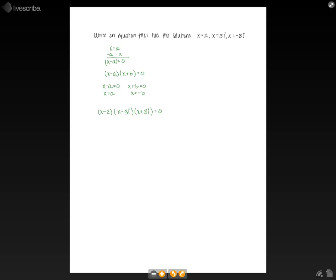Now all we need to do to get to our standard form of a polynomial would be to multiply this out. Since it's multiplication, it doesn't really matter what order we do it in, but we're going to go ahead and start with the x minus 3i, x plus 3i.